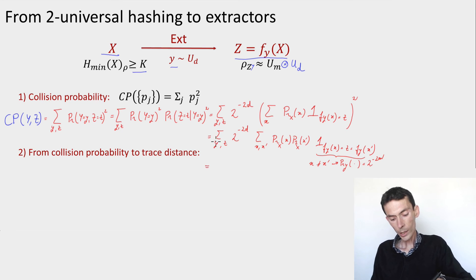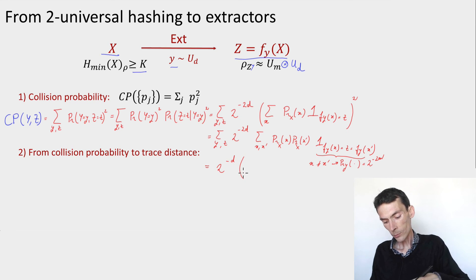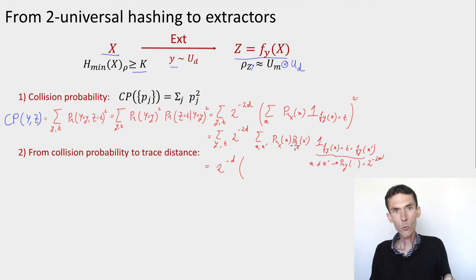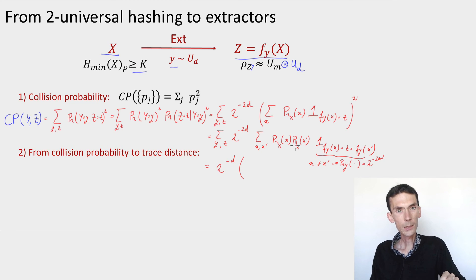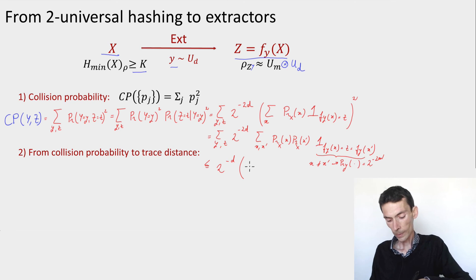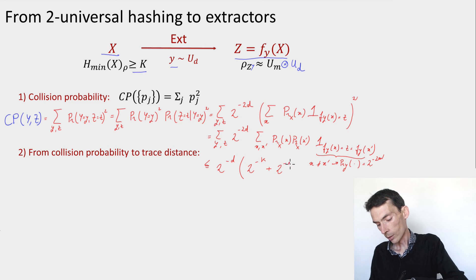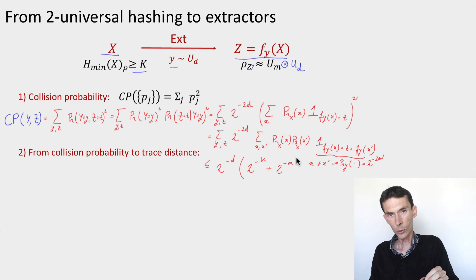When x equals x prime the indicator is always satisfied; when x differs from x prime, the two-universality property gives probability 2 to the minus 2m. Summing over all 2 to the d possible y's, we get 2 to the minus d times two terms: the first term, corresponding to x equals x prime, is the collision probability of x, which is at most 2 to the minus k since the min entropy is at least k. The second term, corresponding to x different from x prime using two-universality and summing over all z's, is bounded by 2 to the minus m. This gives the final bound on the collision probability.